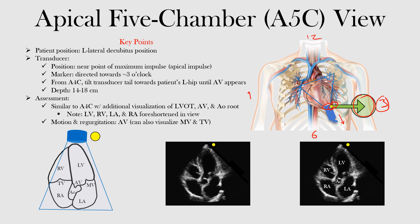The transducer is at the apical impulse, and from the apical four-chamber view, all you want to do is tilt the transducer towards the patient's left hip — down here on the left side — and tilt until you can see the aortic valve starting to appear.